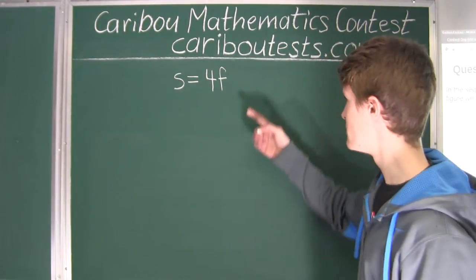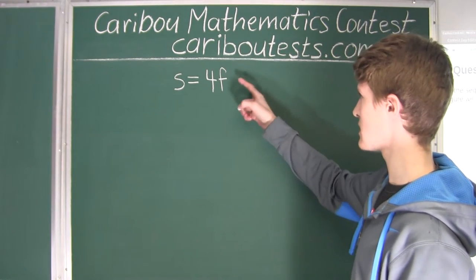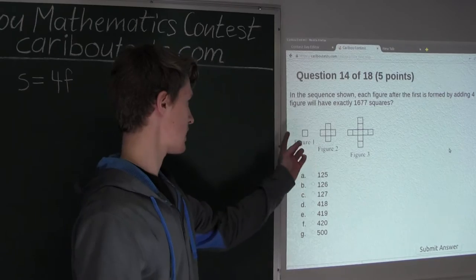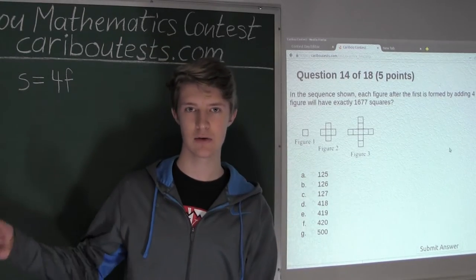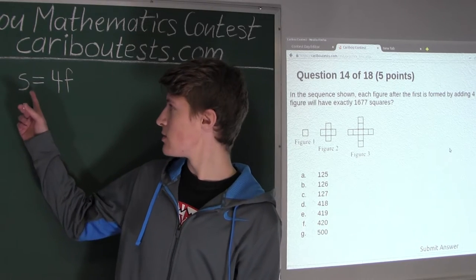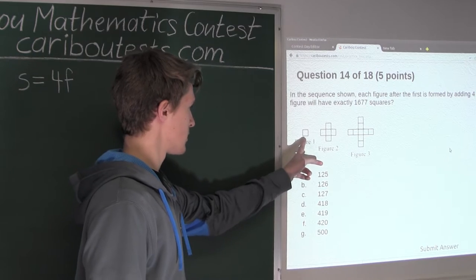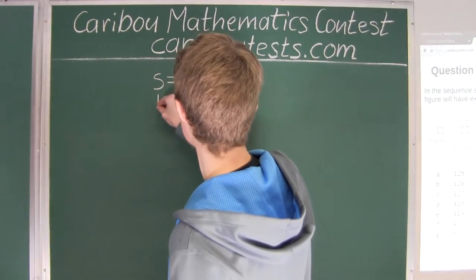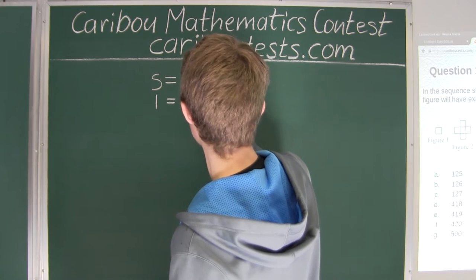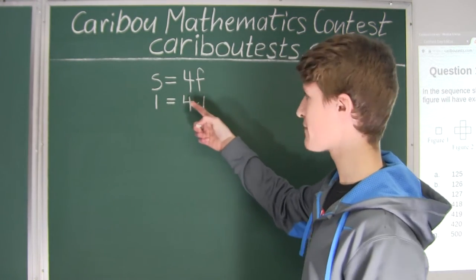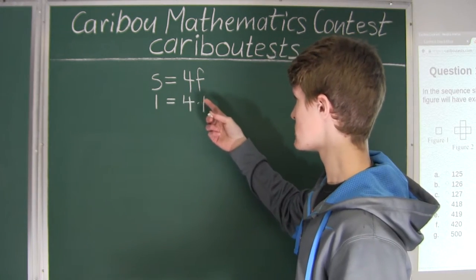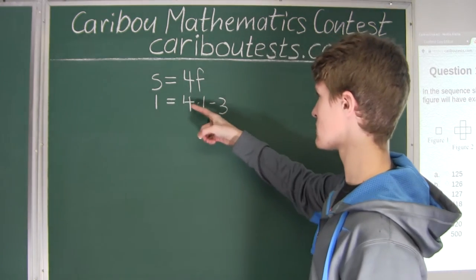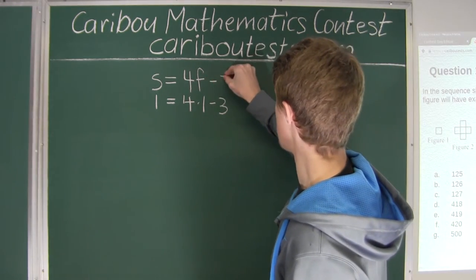We have the freedom to add or subtract any constant. So starting with S = 4F, let's check figure 1: substituting S = 1 and F = 1, we get 1 = 4 times 1, which doesn't make sense. We need to subtract 3, because 1 = 4 minus 3. So the formula becomes S = 4F - 3.